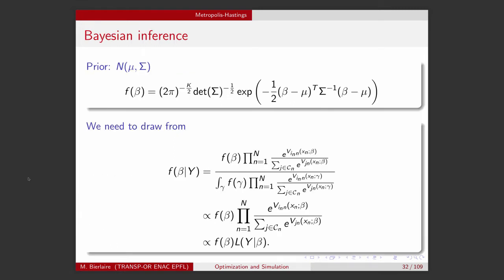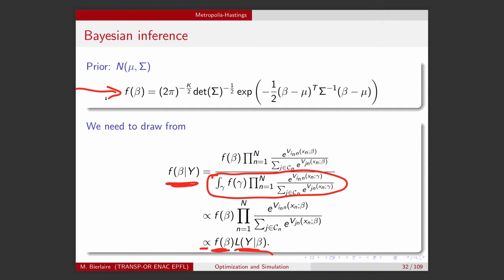Let's now apply the algorithm in the context of Bayesian inference. In this context, we want to draw from the posterior distribution — the distribution of beta given the data y. Thanks to Bayes' theorem, we know that this is proportional to the product of the prior distribution and the likelihood. The proportionality factor does not matter in the context of Metropolis-Hastings, so we can ignore the integral. In this example, I assume the prior distribution is normally distributed and the likelihood is calculated from the product of a logit model for each observation.